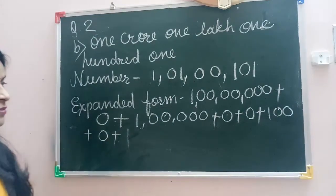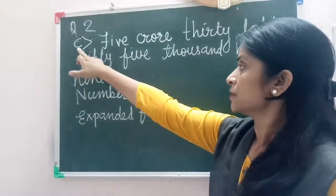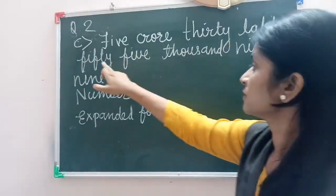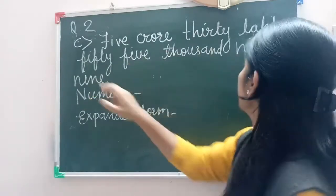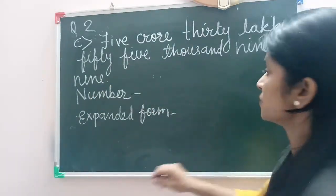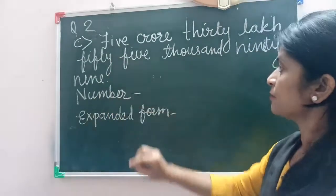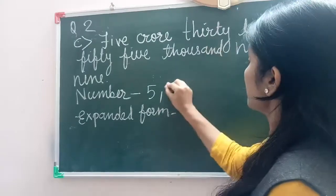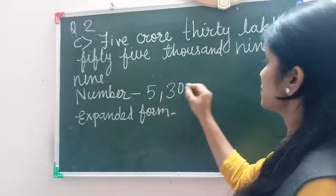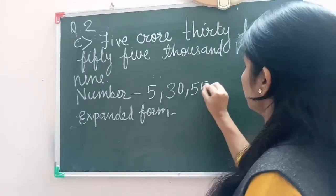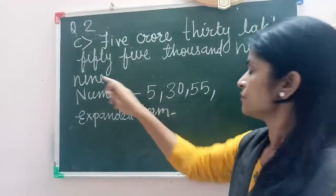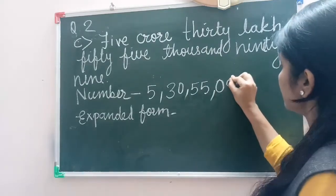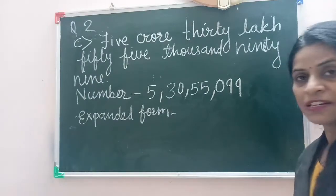Now see the given solution. 5 crore, 30 lakh, 55,099. Now we will write the number: 5 crore, 30 lakh, 55,099. Which place is not given? The 100 place is not given. 99. So the expanded form: